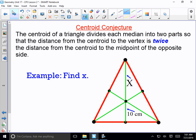So now we have our centroid conjecture, because the centroid can help us find some interior lengths and distances inside the triangle. The centroid of the triangle divides each median into two parts, so that the distance from the centroid to the vertex, this upper length, is twice the distance from the centroid to the middle of the opposite side. So it's a two-thirds, one-third relationship overall.